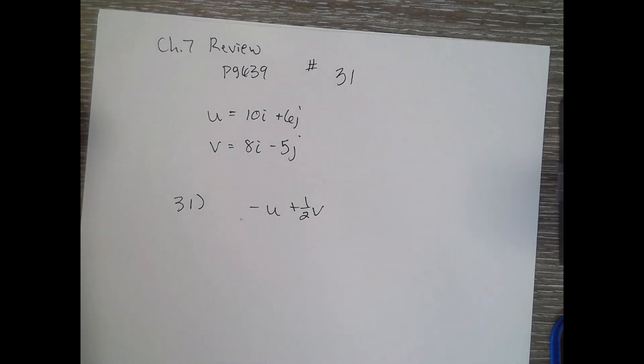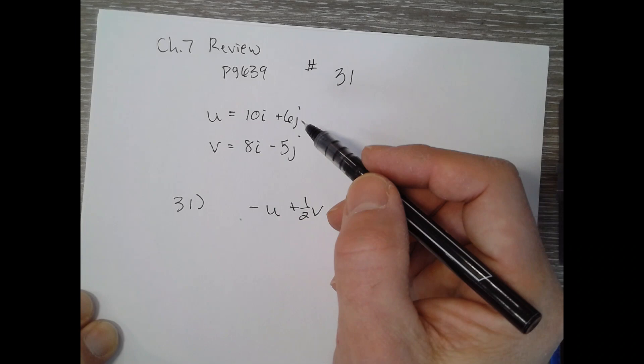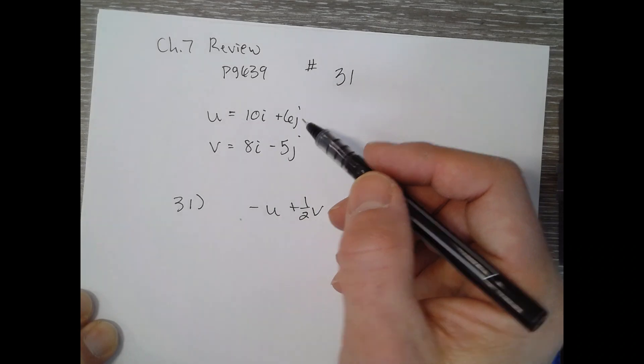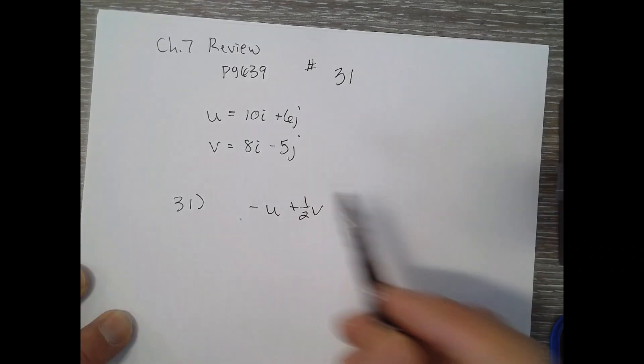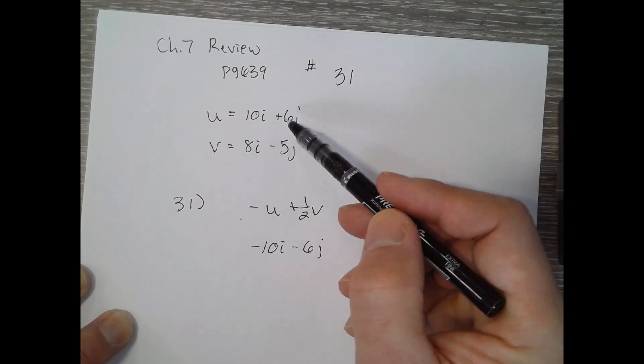So U, we're going to have a component form. So negative U is just negative 10I minus 6J. We just distribute the negative to each component.